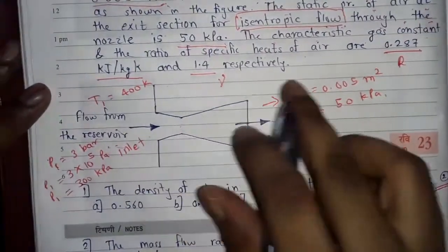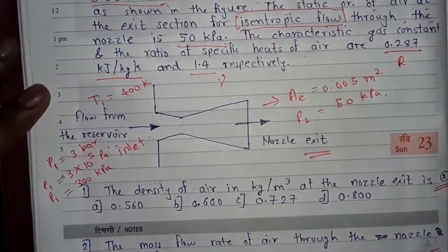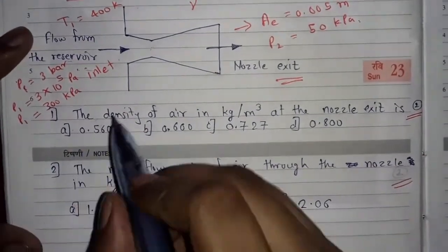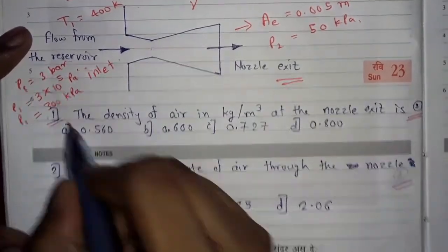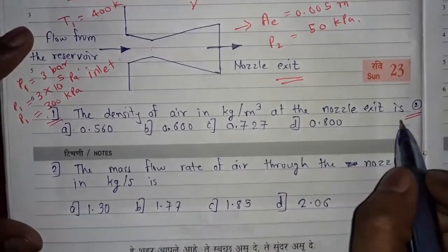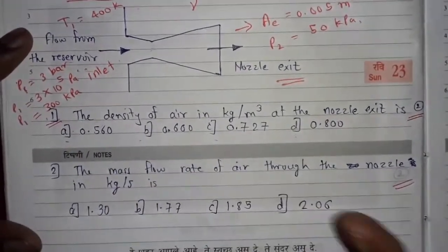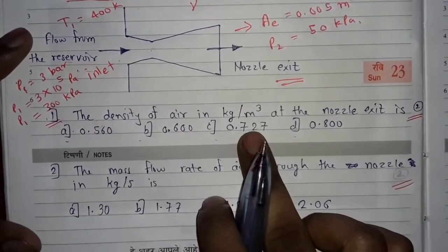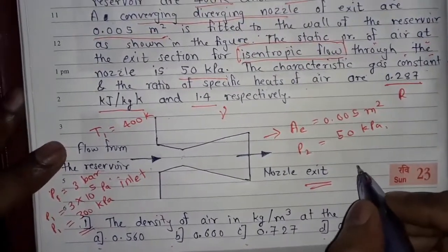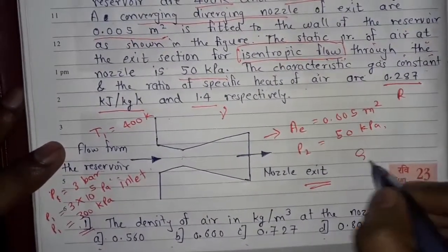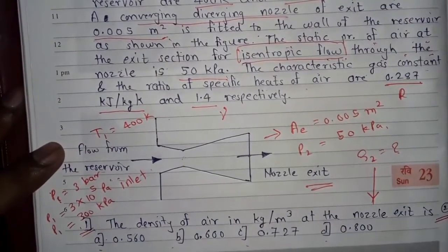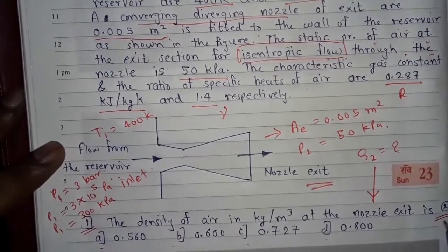Now all the given data has been written. Let's move to question number one. The question asks: the density of air in kg per meter cube at the nozzle exit is — with multiple options. We have to find rho 2 at the nozzle exit.